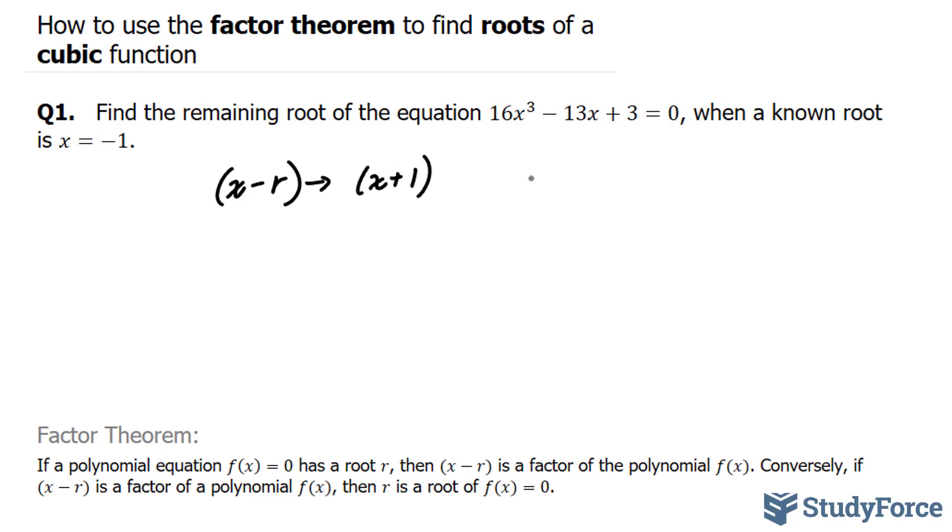To do long division, we will set up our two expressions like this, where we have 16x³ - 13x + 3. To divide these two expressions, we'll take 16x³, the first term, and divide it by x. If you do that, you should end up with 16x².